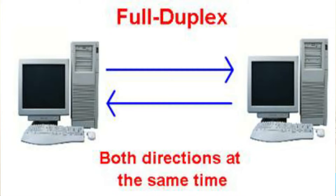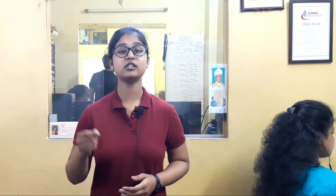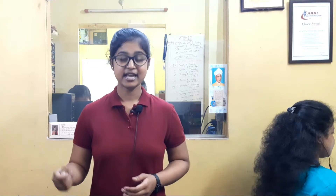FDX — In a full duplex system, both parties can communicate with each other simultaneously. An example of a full duplex device is cell phone service, where both parties at the end of a call can speak and hear each other simultaneously. The earphone reproduces the speech of the remote party and the microphone transmits the speech of the local party. There is a two-way communication channel between them, or more strictly speaking, there are two communication channels between them.